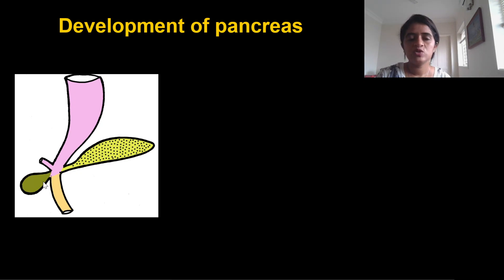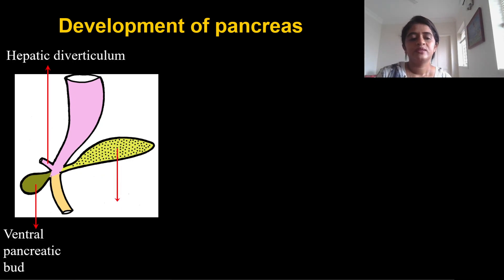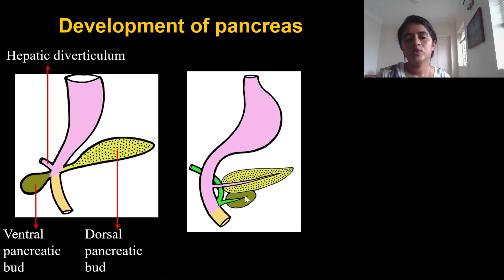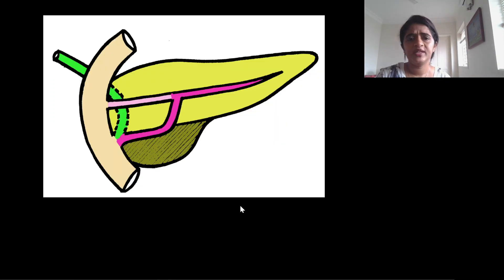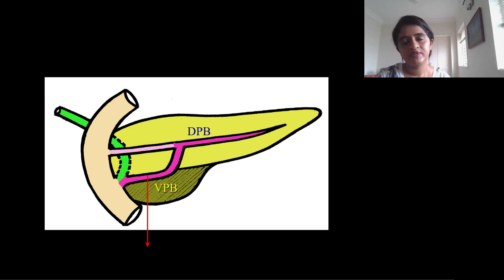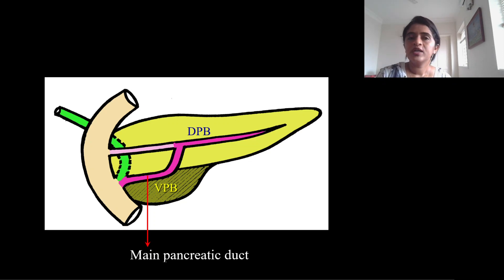For the pancreas, just below the hepatic bud there is a ventral bud and a dorsal bud — the pancreatic buds. The ventral pancreatic bud undergoes rotation to come and lie just below the dorsal pancreatic bud and then fuses with it. The ventral pancreatic bud gives rise to the uncinate process, and the dorsal pancreatic bud gives rise to the rest of the body, especially the tail of the pancreas.